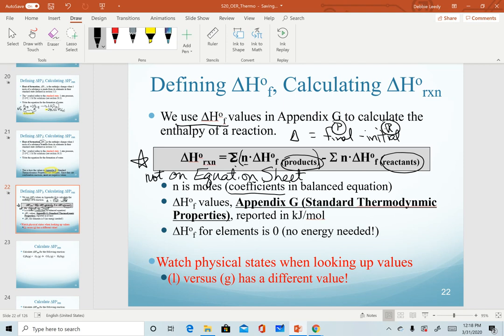Enthalpy of formation values, if they're not given, you want to look them up in Appendix G. And a reminder that enthalpy of formation values are zero for elements. One last note before we get into an example is to make sure you watch physical states when you're looking up values. There is a difference in the value of water, for example, in its liquid state versus its gas state. This should make sense. We already predicted that there is an energy change as a substance goes through a physical change. And so as it goes from liquid to gas, there would be a change in that energy value. So just make sure if you're looking at values, you compare or watch for using liquid versus gas versus solid.